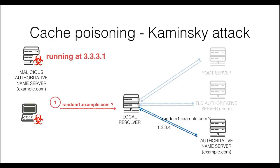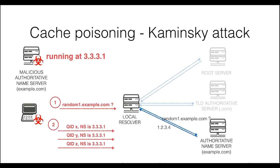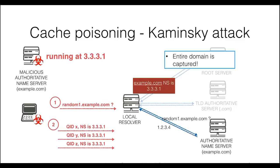First, a random subdomain is unlikely to already be in the cache. Second, if the attacker does not guess the answer parameters in time, it can try again with another random subdomain. Again, the attacker brute forces the answer, hoping it gets accepted. The crucial difference in this attack is the content of the forged answer: the attacker uses the additional section to delegate the resolution process to the malicious authoritative name server. If this forged answer is accepted, the attacker captures the entire domain, because from that moment on any query to a subdomain of example.com will be answered by the malicious authoritative name server.